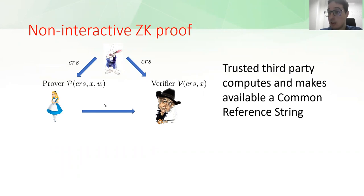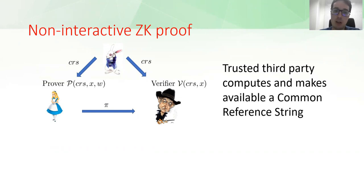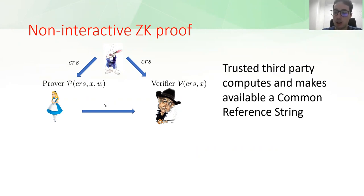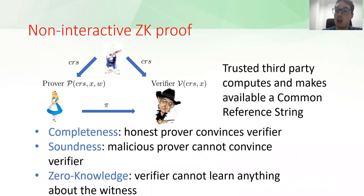However, in order to define a NIZK, we must suppose the existence of a trusted third party that computes and makes available to both prover and verifier a common reference string, or CRS. For instance, this CRS can be the description of a hash function, or an element from some distribution, or, as in our case, an element sampled from the uniform distribution over a cryptographic group. The existence of this trusted third party is necessary in order to define NIZKs that are sound and complete.